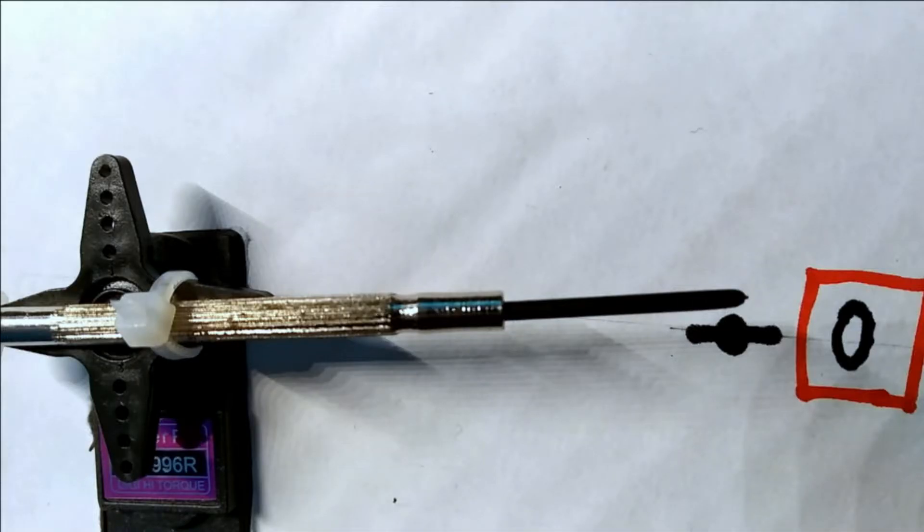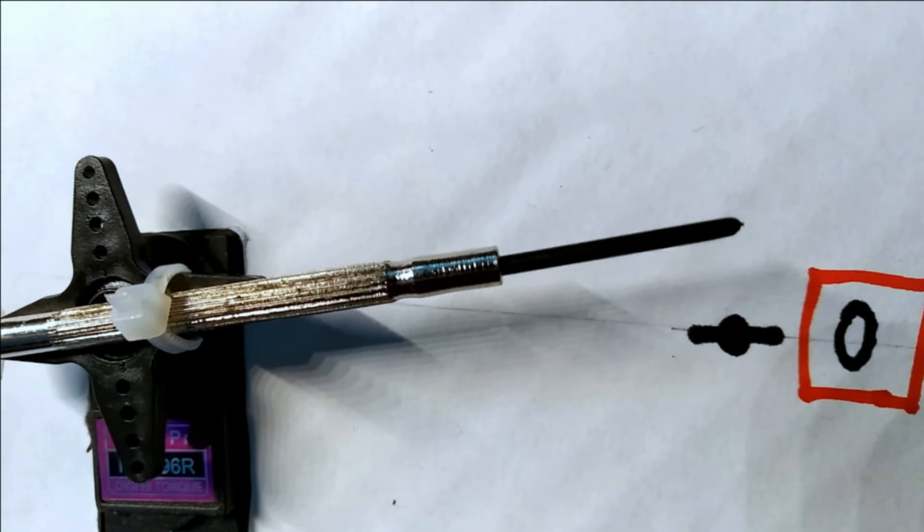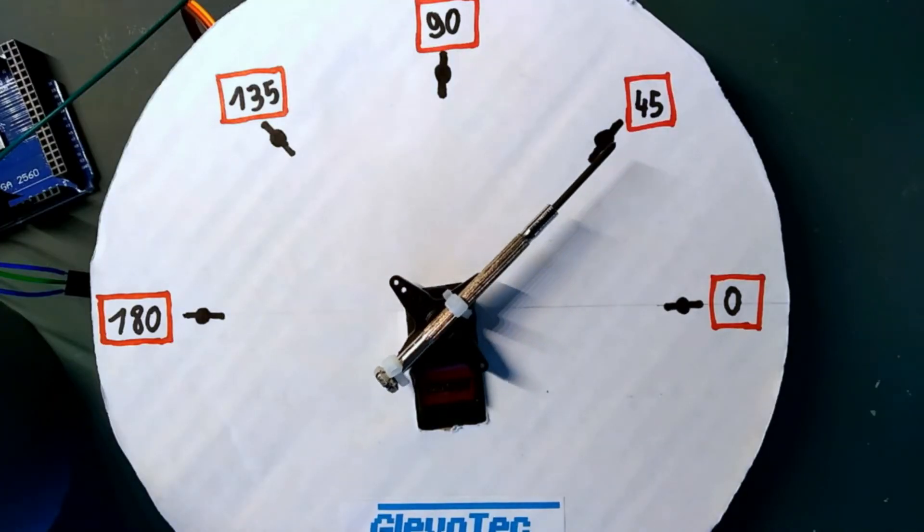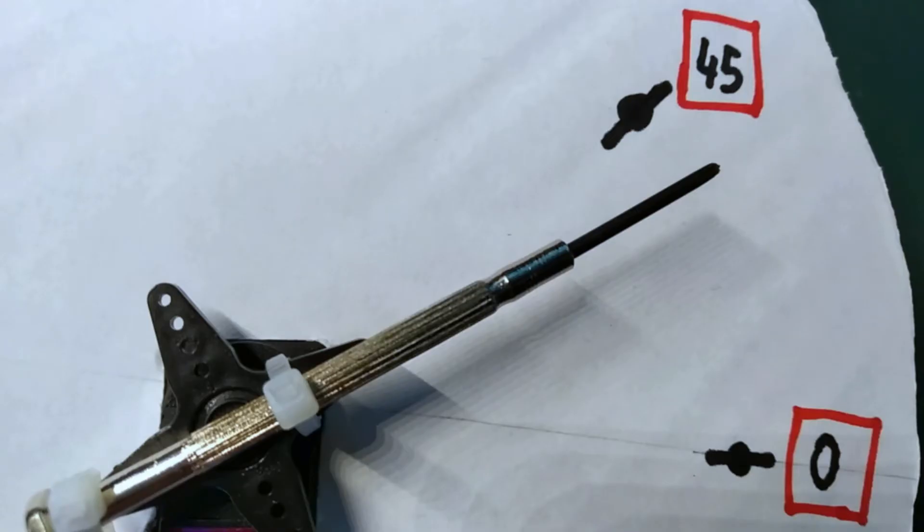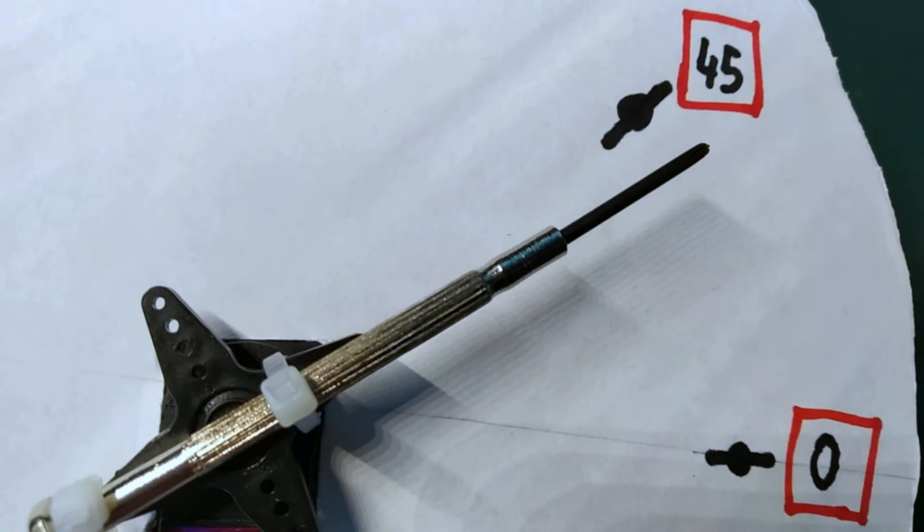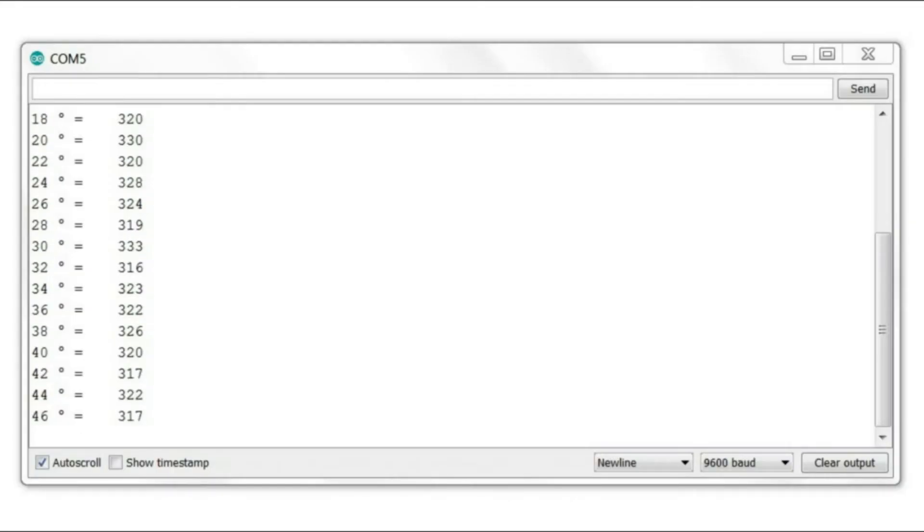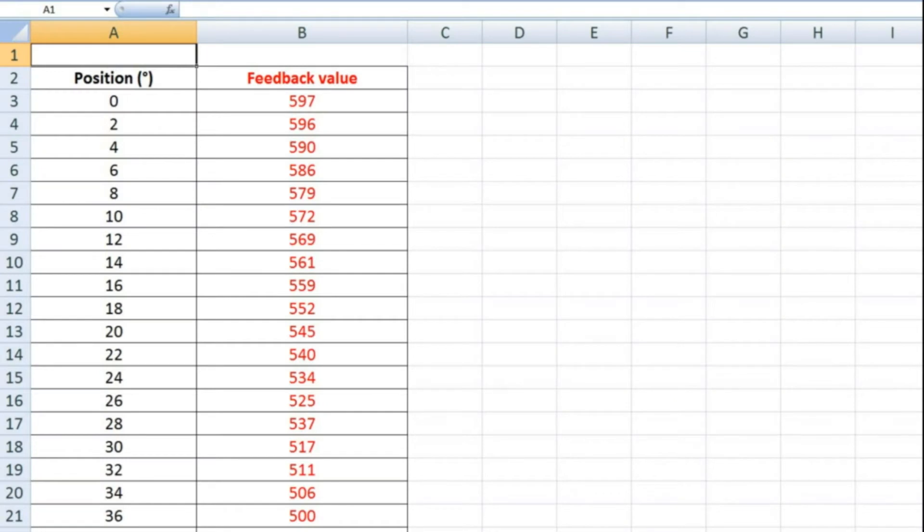Next I wrote a bit of code that moves the servo from 0 to 180 degrees in steps of 2 degrees. At every position I read the feedback voltage and send it to the computer interface. This gives me a list of all positions and the corresponding feedback voltages.